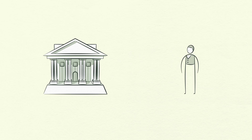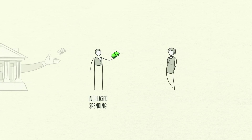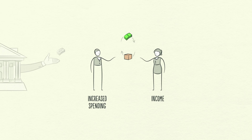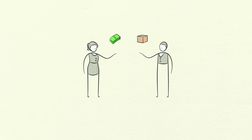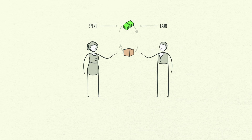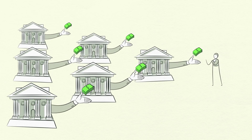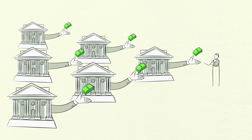So why is credit so important? Because when a borrower receives credit, he is able to increase his spending. And remember, spending drives the economy. This is because one person's spending is another person's income. Every dollar you spend, someone else earns. And every dollar you earn, someone else has spent. So when you spend more, someone else earns more. When someone's income rises, it makes lenders more willing to lend him money because now he's more worthy of credit.